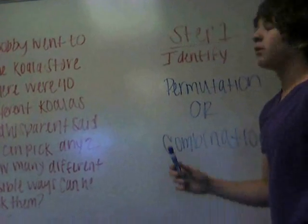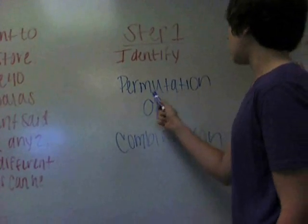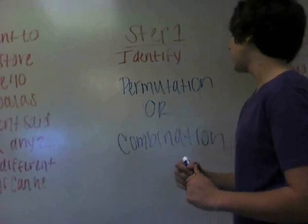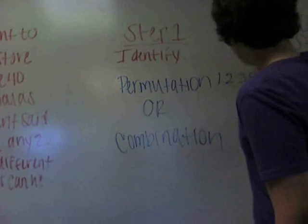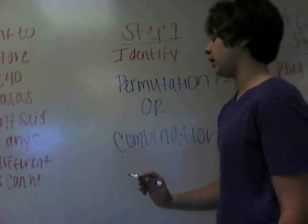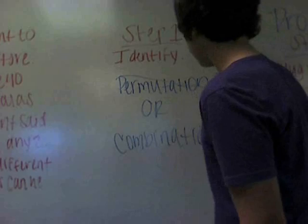So we first want to identify what type of probability it is. Permutation is where they have to be in an order from like 1, 2, 3, 4. And since these don't have to be in any particular order, it's not going to be permutation. It's going to be a combination.